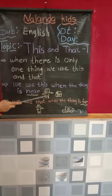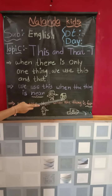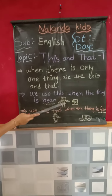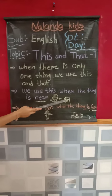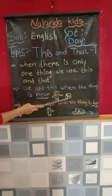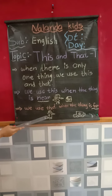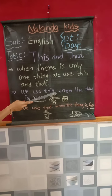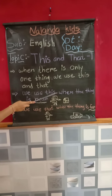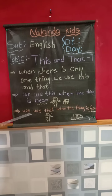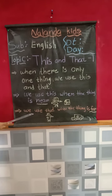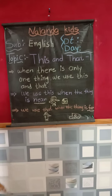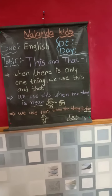Here is the girl's picture and here is the house. We use 'that' when the thing is far.